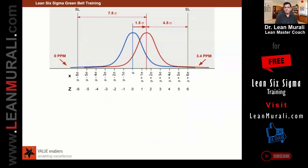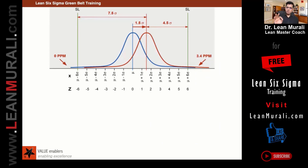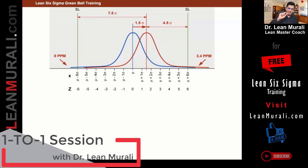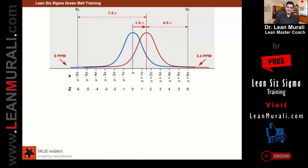6 sigma is actually 4.5 plus 1.5. Now what is this 1.5? 1.5 is because statisticians have proved that if you don't do anything in the process, the process will deteriorate by 1.5 sigma — meaning that variation will increase.